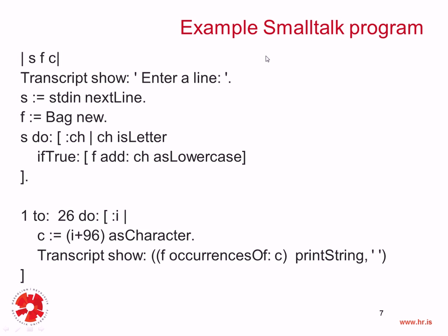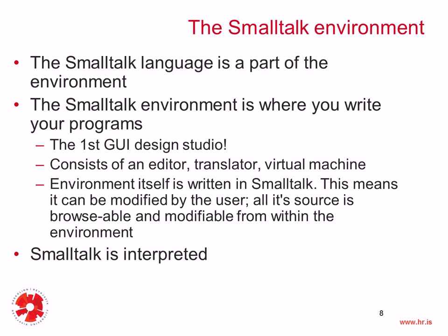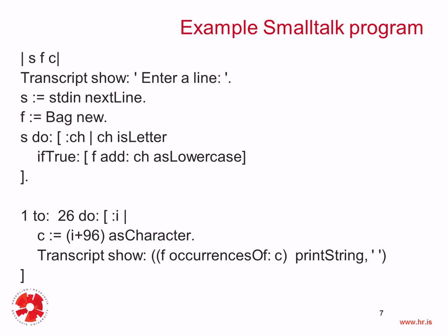This is an example of a Smalltalk program. Notice that the syntax is really extremely simple, because what we're always doing is sending a message on the right-hand side to an object on the left-hand side. The object is either a class, like Transcript or Bag, or an instance of a class, like f — which is an instance of Bag — and we sent, for example, the add message to that instance.